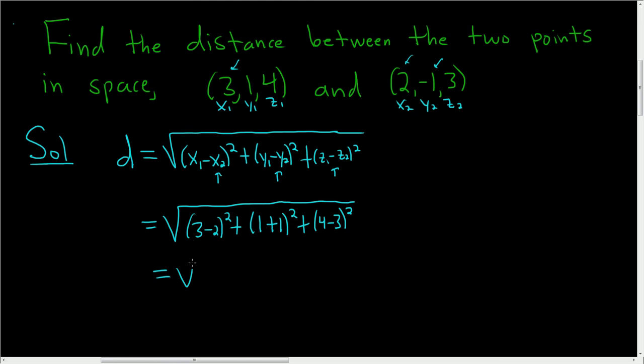So we end up with the square root of: 3 minus 2 is 1, so we get 1 squared which is 1, plus 1 plus 1 that's 2, so we square it and we get 4, and 4 minus 1 is 1, and we square it so we get 1.